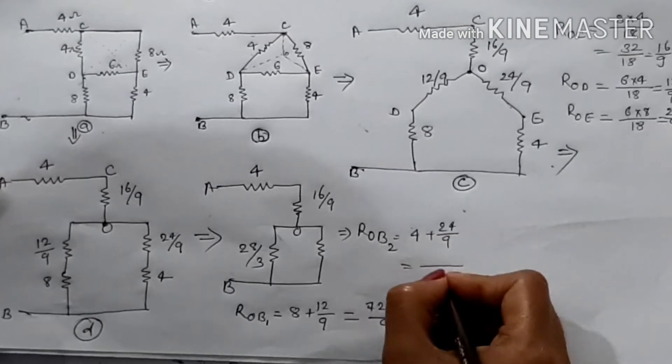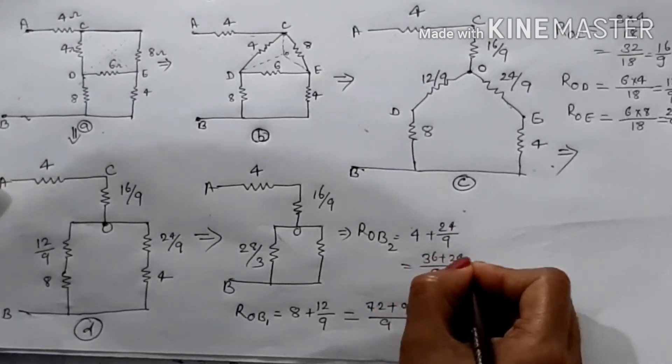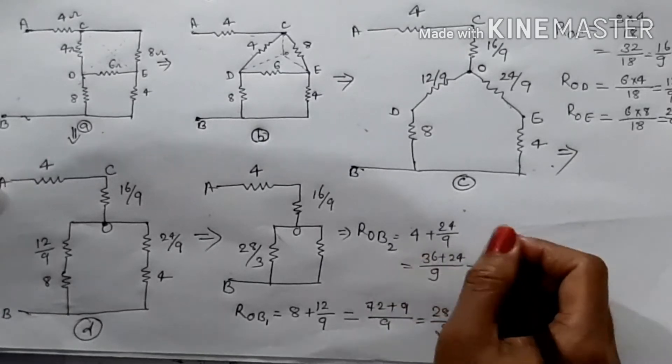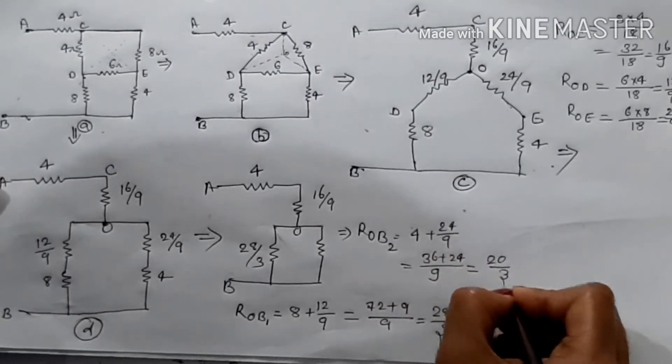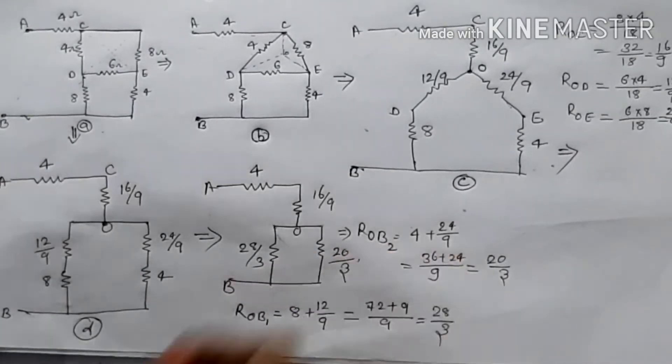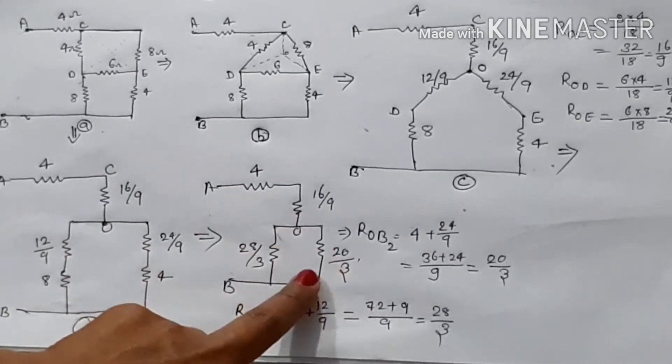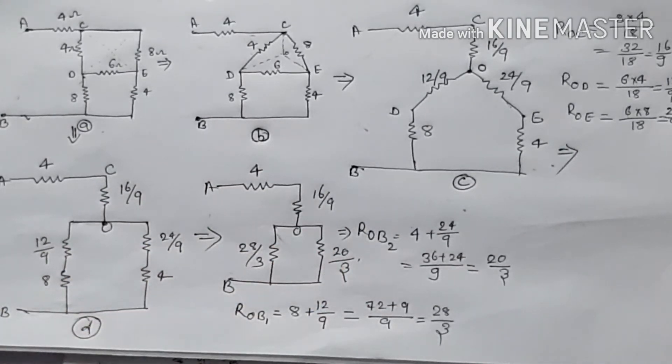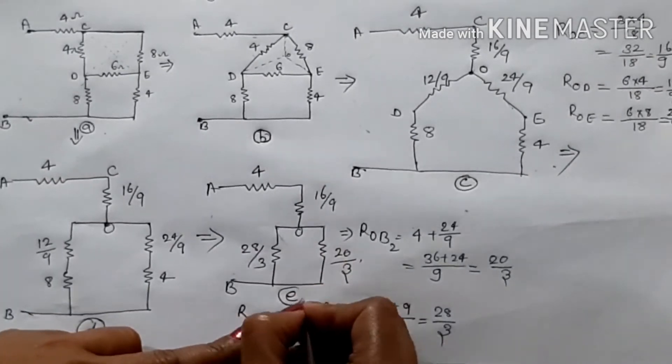Then what will happen next? 36 plus 24, then what will happen next? 20 upon 3. Now this is 20 upon 3, the D coordinates, so this is figure E. Then we start from here.